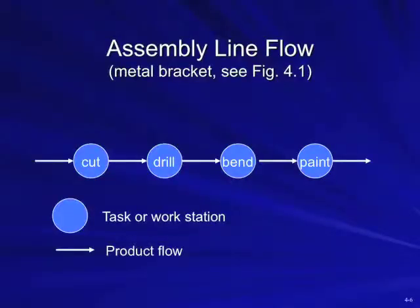Assembly line flow is geared to give you more efficient results, and another distinction is that it usually results in a lot greater investment in equipment and capabilities in order to do it. There are illustrations in the book about assembly line flow, such as Figure 4-1 with metal brackets, showing how you do separate operations in sequence but have to do them all before you're finished.